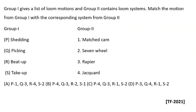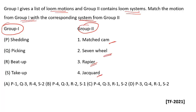Group one gives a list of loom motions and group two contains loom systems. Match the motion from group one with the corresponding system from group two. Group one: shedding, picking, beat up, and take up. Group two: matched cams, seven wheel, rapier, and jacquard. For the shedding mechanism, jacquard can be used, where individual warp ends are controlled individually.